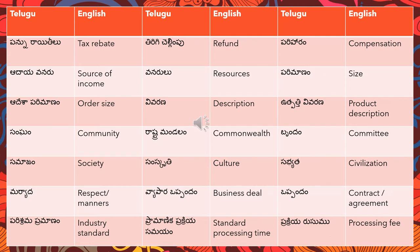The next word is 'pannu raithilu,' meaning tax rebate — 'pannu' is tax and 'raithilu' is rebate. 'Tirigi chalimpu' means refund. 'Pariharav' means compensation, or in some contexts it can also be translated as a solution.